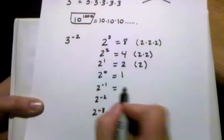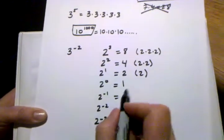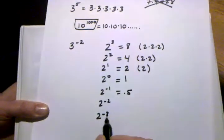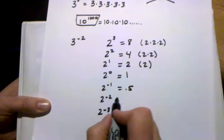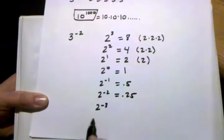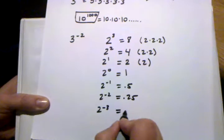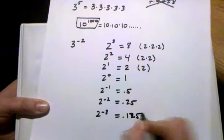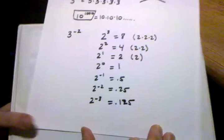2 to the zero power is 1. 2 to the negative first power is 0.5. 2 to the negative second power is 0.25. 2 to the negative third power is 0.125.